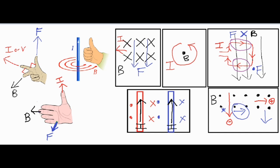Here's the key distinction between the rules: the right grip rule is unique to situations where you have a current along a wire or a current flowing around in a circular path — that's your go-to for finding the magnetic field. The right palm rule and the three-finger rule can be used interchangeably; it's more a matter of preference. We'll redo the same problems using the three-finger rule.